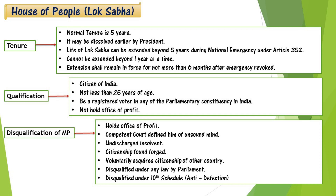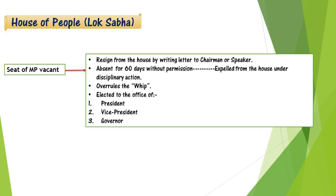Now there are some disqualifications of an MP. These are: if they hold an office of profit; if they are of unsound mind; if they are an undischarged insolvent; if fraud is found in their citizenship; if they acquire citizenship of another country; if they are disqualified under the Anti-Defection Law. Also if they resign to the Chairman or Speaker, or if they remain absent for 60 days without permission from the House. They can also be disqualified if elected to the office of President, Vice President, or Governor.